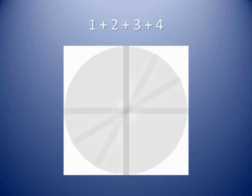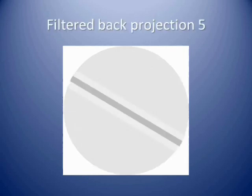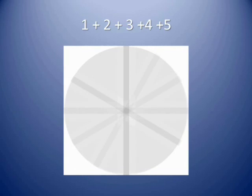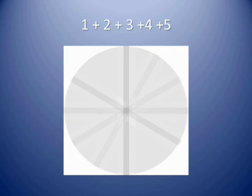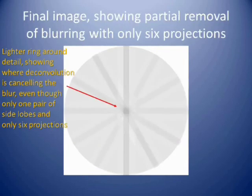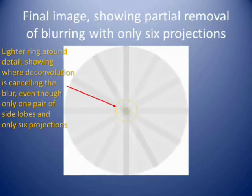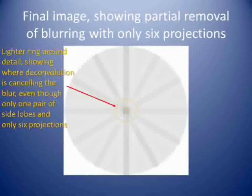The lighter regions correct for back projection blurring, resulting in cancellation of the back projection blur, provided that enough projections are used and provided the convolution kernel is appropriately designed. This little example is intended to show the principles, and of course does not result in a perfect back projected image.